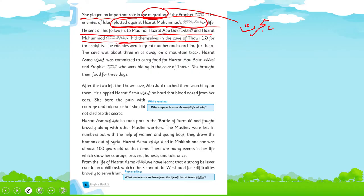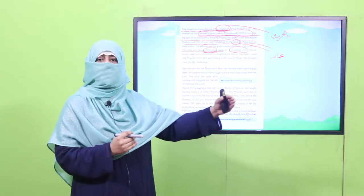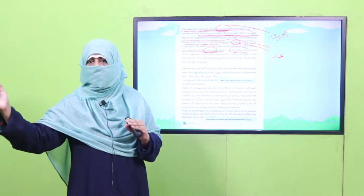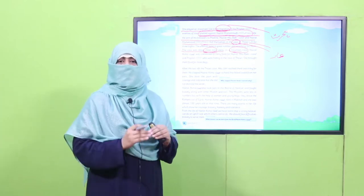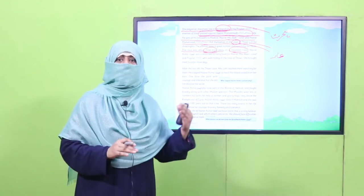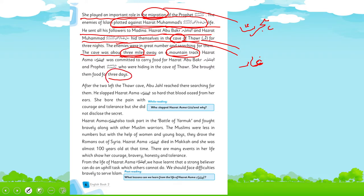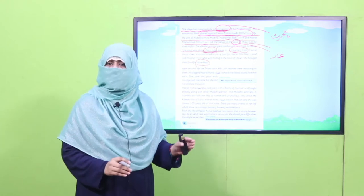مکہ سے تین میل کے فاصلے پر ایک غار تھی — غارِ ثور — ایک پہاڑی علاقے میں۔ وہاں چھپنے کے بعد جب تک دشمن سے safe نہ ہوتے وہ نکل نہیں سکتے تھے۔ انہیں وہاں تین دن رہنا پڑا۔ تین دن کے لیے کھانے کی ضرورت تھی — تو کون ان کو کھانا پہنچا رہا تھا؟